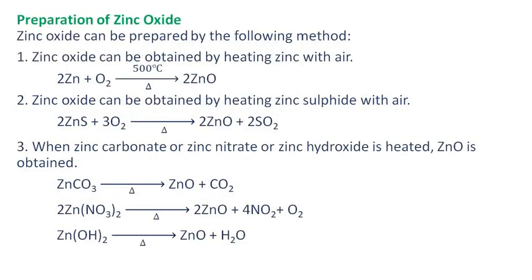Zinc oxide can be prepared by the following methods. Simply, zinc oxide can be obtained by heating zinc with air at 500 degrees Celsius. Zinc oxide can also be obtained by heating zinc sulfide with air. As shown in the reaction, when zinc carbonate, zinc nitrate, or zinc hydroxide is heated, zinc oxide is obtained.